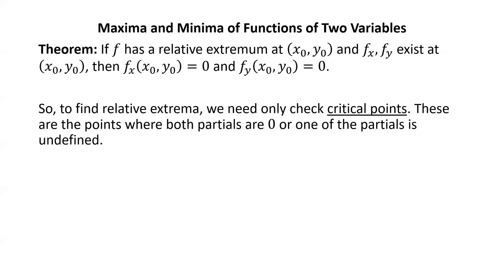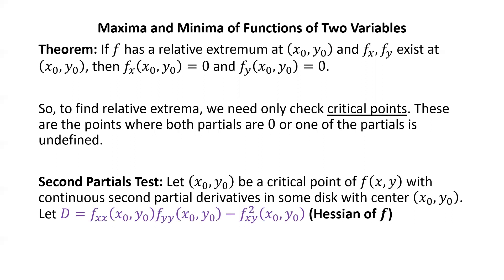Also important is the second partials test. Let (x₀, y₀) be a critical point of f(x,y) with continuous second partial derivatives in some disk centered at (x₀, y₀). Let D equal fxx(x₀,y₀) times fyy(x₀,y₀) minus fxy²(x₀,y₀). This expression is known as the Hessian of f. We can visualize the Hessian as a two-by-two determinant with entries fxx, fxy, fyx, and fyy.